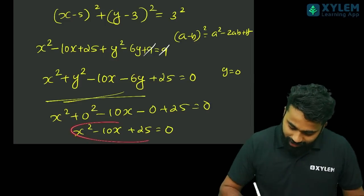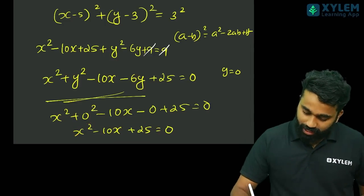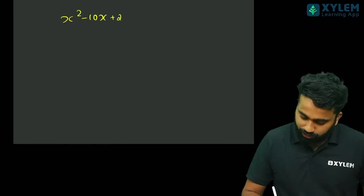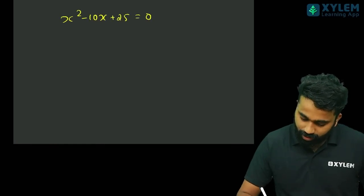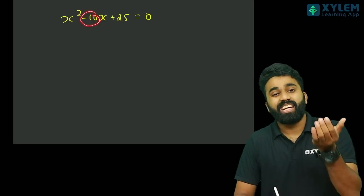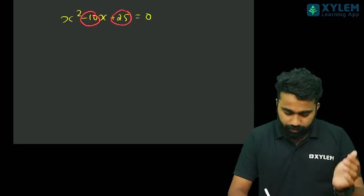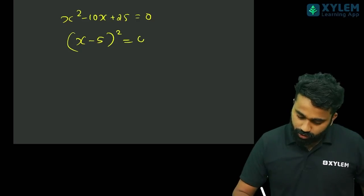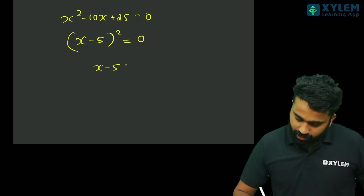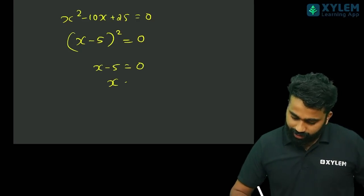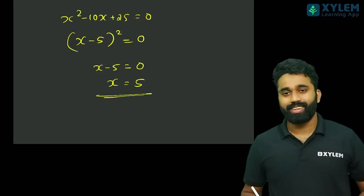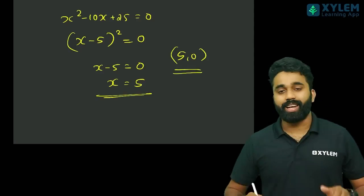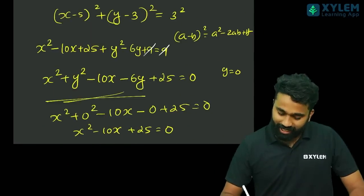Now this is the square completion. This is already completed: x squared minus 10x plus 25 equal to 0. So the answer: x minus 5 all squared equal to 0, so x minus 5 equal to 0 and x equal to 5. So the answer is (5, 0). Now this is the general method.